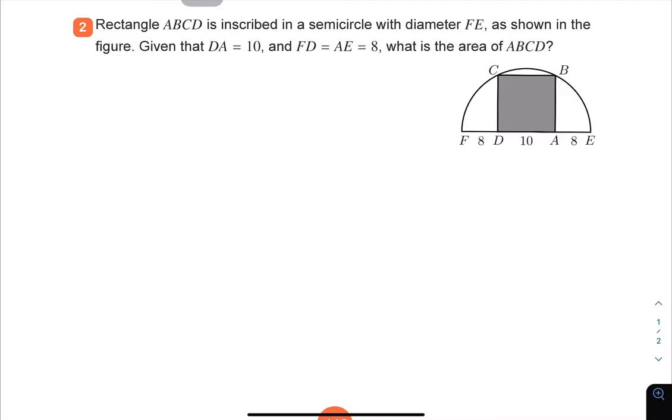For extensive challenges question 2, rectangle ABCD is inscribed in a semicircle with diameter FE. Inscribed means that it is touching all the edges or boundaries of the semicircle.